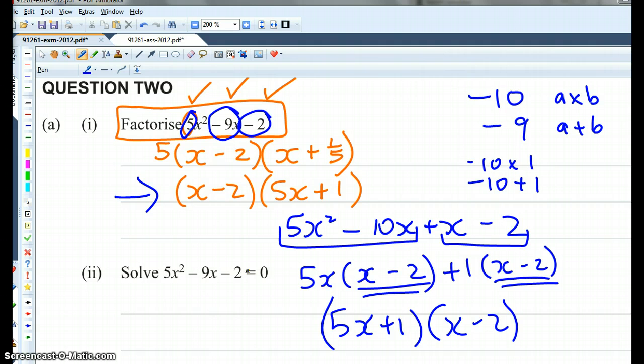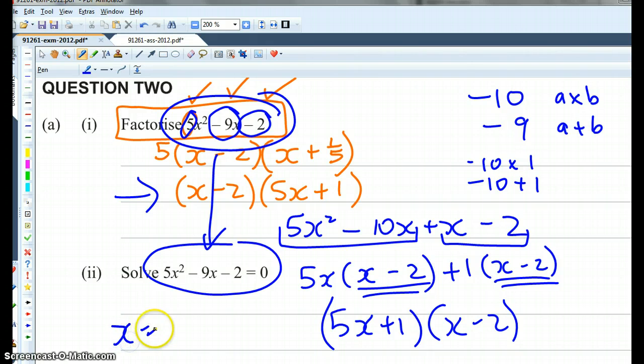And some of you will just do a guess and check method that you might find quicker. So it depends on you, what works for you. Now notice that it's exactly the same as this. So now you need to solve it. We already knew the solutions from the calculator. So we knew x was negative 1 fifth or x was 2.